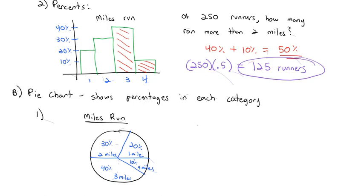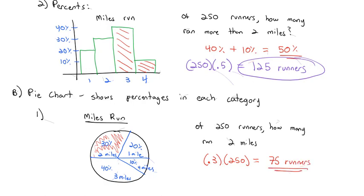We can answer questions such as: of the 250 runners, how many ran 2 miles? Well, 2 miles is this chunk on the top left, and that's 30%. So we want 30% or 0.3 of the 250 runners. When we multiply, we end up with 75 runners that actually ran 2 miles.